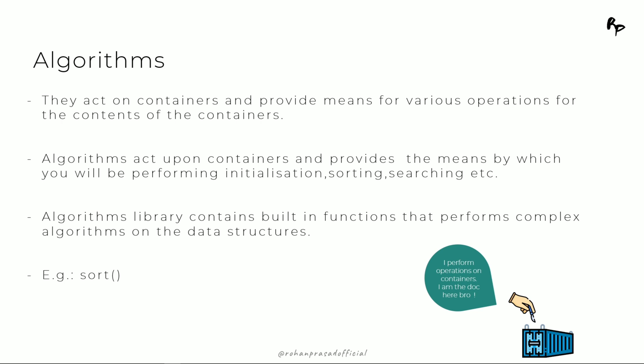Suppose you have a container which contains some data but you can't perform any operation on it — then the data stored in the containers is of no use. So, algorithms provide the means by which we perform initialization, sorting, searching, or various other operations on the data stored in the container. For example, if you have a series of numbers in an array and you want to sort it, C++ STL provides a sort function for sorting arrays, lists, or various kinds of data stored in containers.